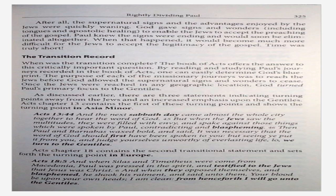The transition record: when was the transition complete? The book of Acts offers the answer to this critically important question. By reading and studying Paul's journeys recorded in the book of Acts, one can easily determine God's blueprint. The purpose of each of the missionary journeys was to reach the Jews before God allowed the supernatural signs and wonders to cease. Once the Jews were reached in any geographic location, God turned Paul's primary focus to the Gentiles. As discussed earlier, there are three statements indicating turning points away from the Jews and an increased emphasis upon the Gentiles.